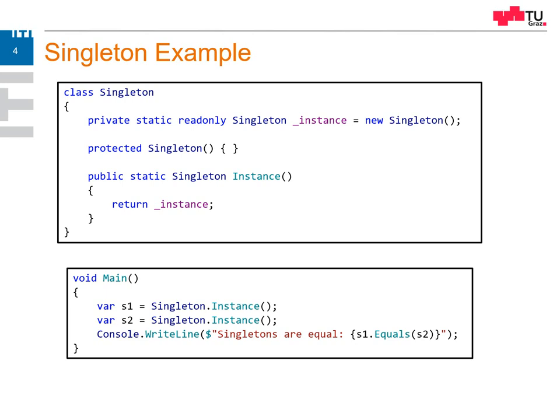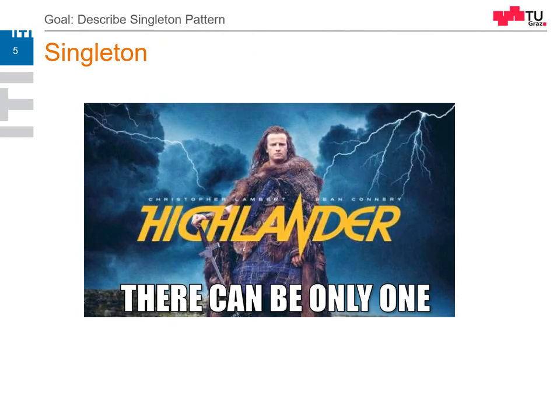In our main function, when we use the singleton, you can see I've created two variables. As we implemented it, only one instance is behind these variables. Of course, I can have an arbitrary number of references to this instance, but it's always the same instance — I cannot create another instance of this singleton. For the older ones of you who know old 80s movies, think of a Highlander: there can only be one.